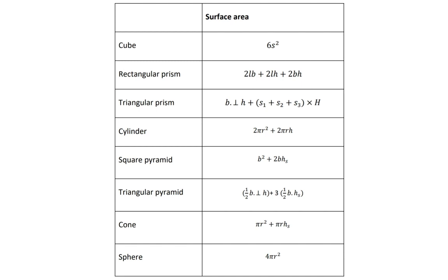Here we have a summary of each figure's individual surface area formula. You can choose to know all these formulas by heart and simply substitute when calculating the surface area. However, you need to be able to adapt each formula according to how the figure is adapted. For example, if you have a cylinder that is open at the top, you need to realize that the 2πr² represents the two base circles, so you will have to change this to only one base circle because the top is open.